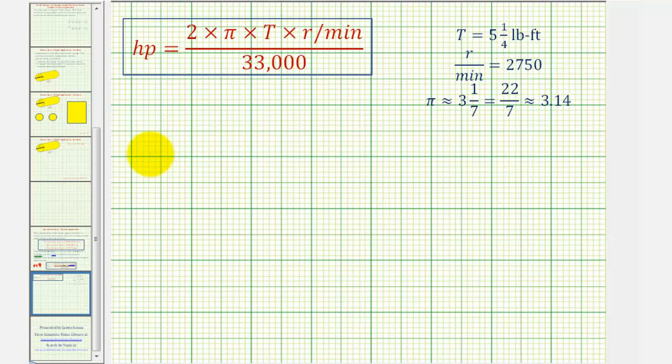So again, we're going to have the horsepower is equal to this fraction here, where the denominator is 33,000, and then we'll have two, which I'm going to write as two over one, times our approximation for pi, which we're using 22-sevenths. So because we're approximating pi, I'm going to go ahead and change this equal sign here to an approximation symbol, times the torque.